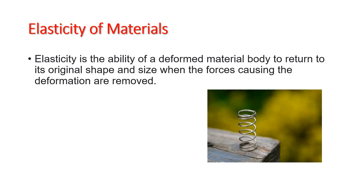For example, we can say that a rubber is more elastic than a wood because a rubber can easily return to its original shape after the applied force is removed, while for the wood, it is less elastic because once it is deformed, it is very hard for it to go back to its original shape. So, if we compare the elasticity, we can say that rubber is more elastic than the wood.